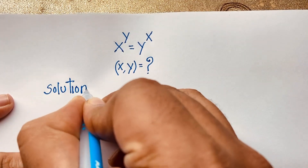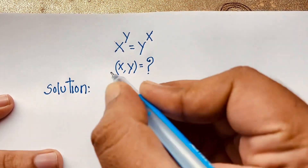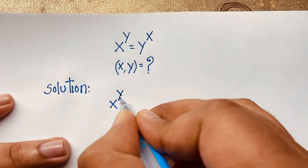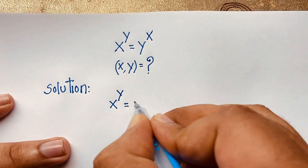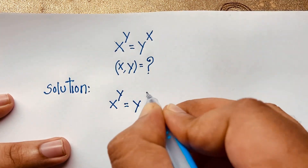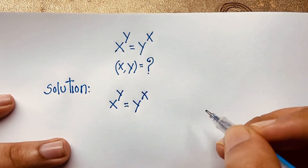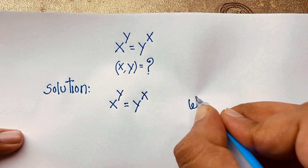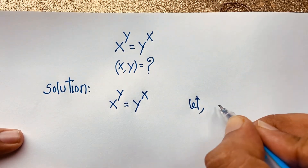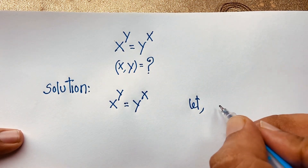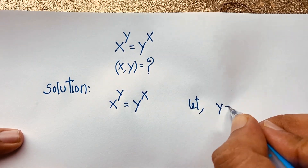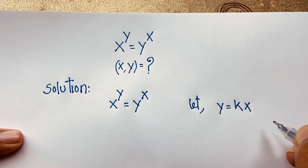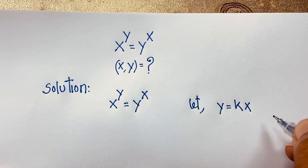Our question: x to the power y is equal to y to the power x. This is our question. Now let y be equal to kx.